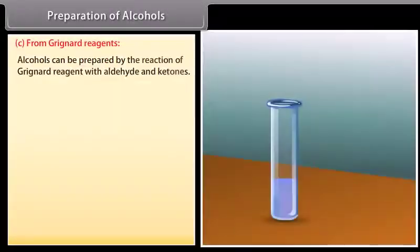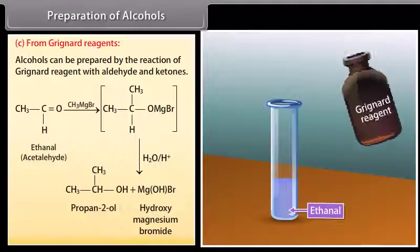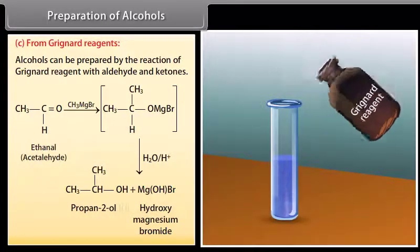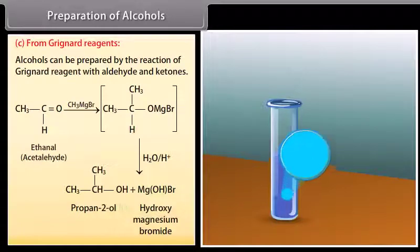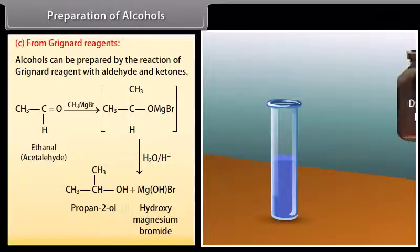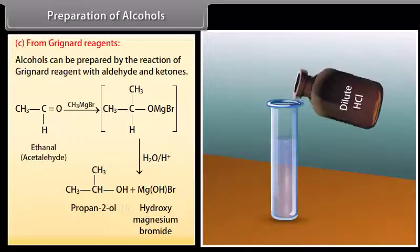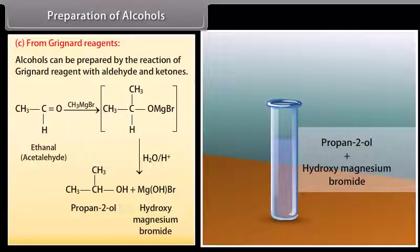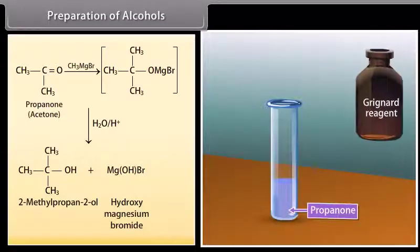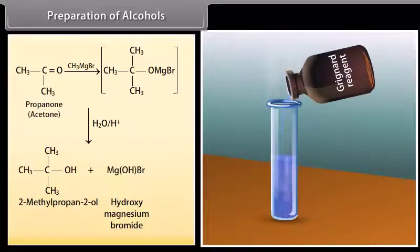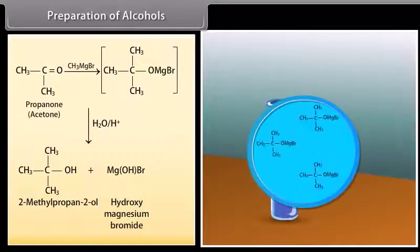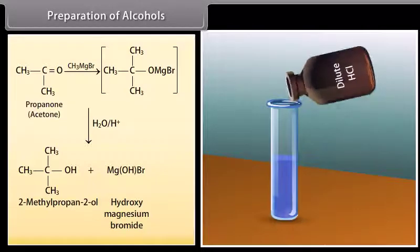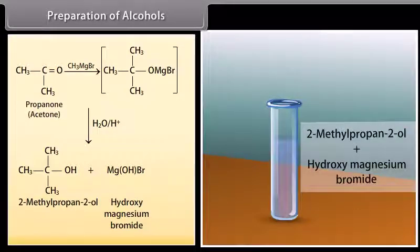Preparation of alcohols from Grignard reagents: alcohols can be prepared by the reaction of a Grignard reagent with aldehydes and ketones. A Grignard reagent reacts with ethanal to form a product which decomposes with dilute HCl to give propan-2-ol and hydroxy magnesium bromide. A Grignard reagent reacts with propanone to form a product which decomposes with dilute HCl to give 2-methylpropan-2-ol and hydroxy magnesium bromide.